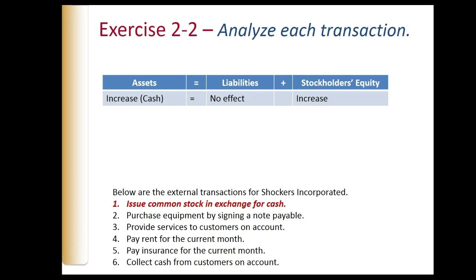So our assets increase and our stockholders' equity increases, and the equation balances. Next, we purchase equipment by signing a note payable. We didn't purchase equipment with cash — we took out a loan or note on the equipment. Equipment is an asset, so when we purchase it, our asset increases, which means we debit the account.